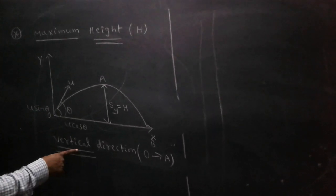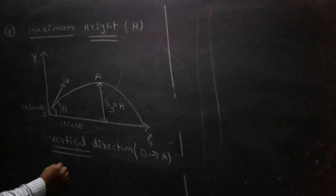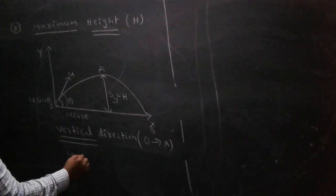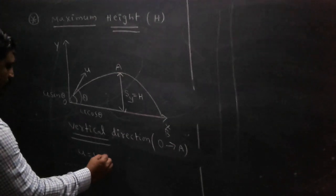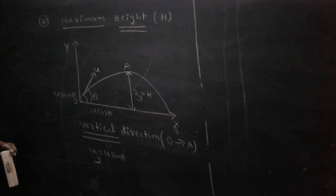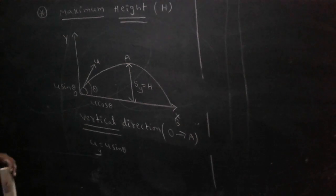Here, in the vertical direction, what is the initial velocity? U sin θ. This is Uy, vertical.